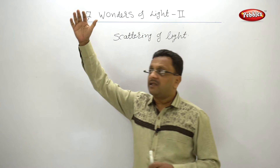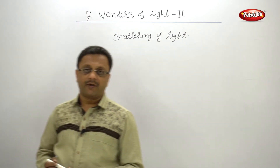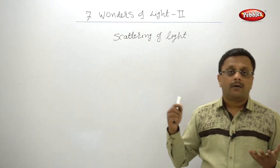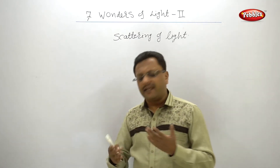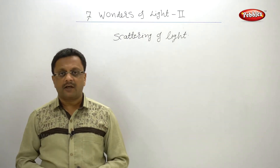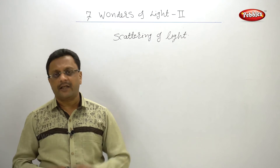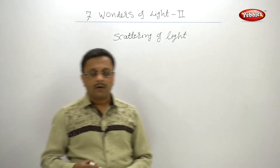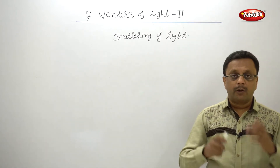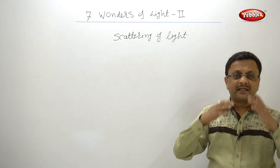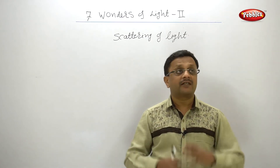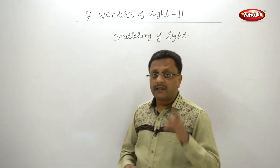Whenever sunlight enters into the atmosphere — which is a homogeneous mixture of dust, tiny particles, smoke, etc. — these tiny particles are very, very small compared to the visible light wavelength. The blue light is majorly scattered by these tiny particles, and hence we see the sky as blue.